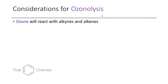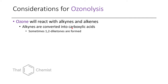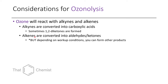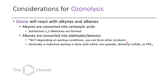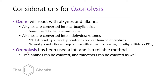Now let's talk about ozone. Ozone will react with alkynes and alkenes just like KMnO4 will. However, alkynes are pretty selectively converted to carboxylic acids, but occasionally you will form 1,2-diketones. If you do alkenes, these will be converted to aldehydes and ketones, but if you change your workup conditions you can often favor other products. Most of the time, if you're doing a reductive workup using zinc, dimethyl sulfide, or triphenylphosphine, you should have relatively predictable reaction outcomes. This reaction has been used a lot, and hence it's a reliable method.